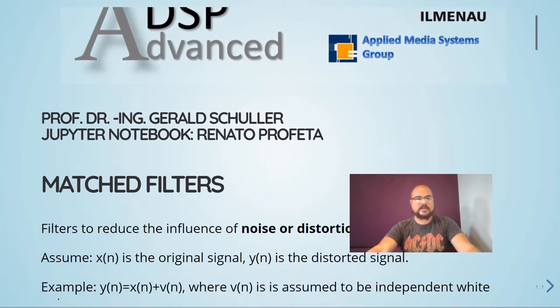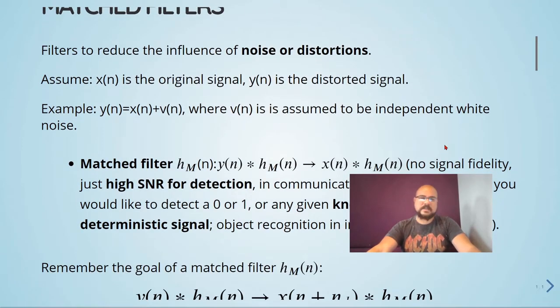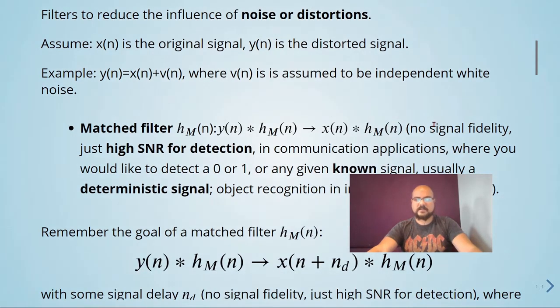Matched filters are used to reduce the influence of noise, usually on a deterministic signal. So there's no signal fidelity, it's just a high signal-to-noise ratio for detection. For example, in communication applications, when you would like to detect a 0 or a 1 or any given known signal. So let's get started.